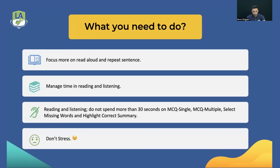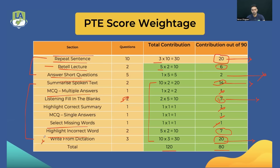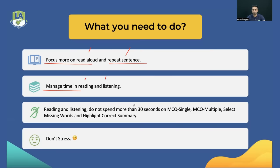To summarize the overall strategy: focus most on Read Aloud and Repeat Sentence — these will lift both your reading and listening scores. You must manage your time in reading and listening, otherwise you'll miss the important questions at the end of the test. Write From Dictation appears near the end; if you can't finish it, you lose around 20 points. If you spend too much time on low-value tasks like MCQ questions worth only 3 points total, you'll miss out on 20–25 points.